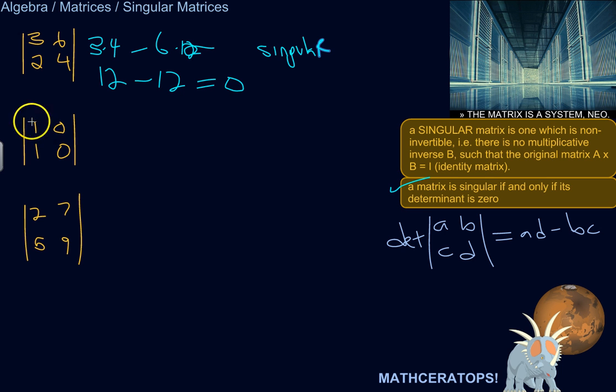Alright, let's try this one. The determinant of this matrix is A times D, 1 times 0, minus B times C, 0 times 1. 1 times 0 is 0, 0 times 1 is 0, 0 minus 0 equals 0. So that is singular.